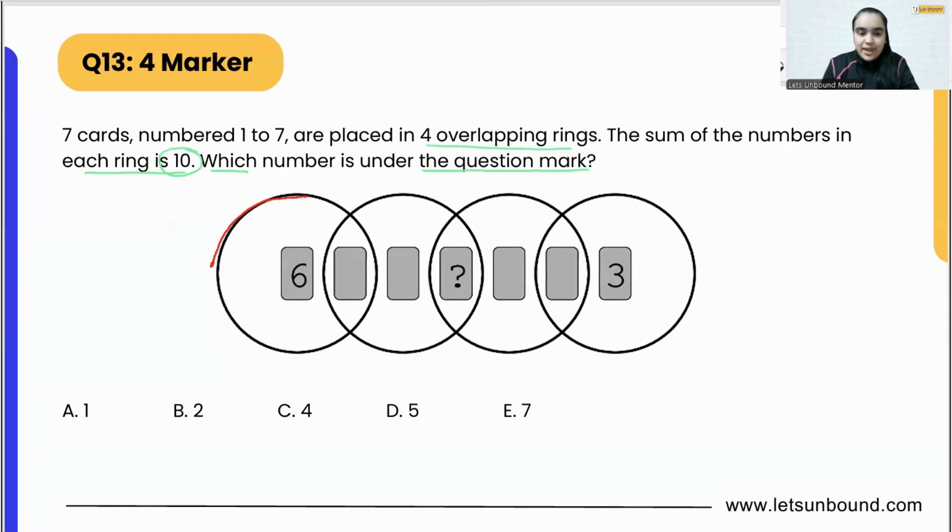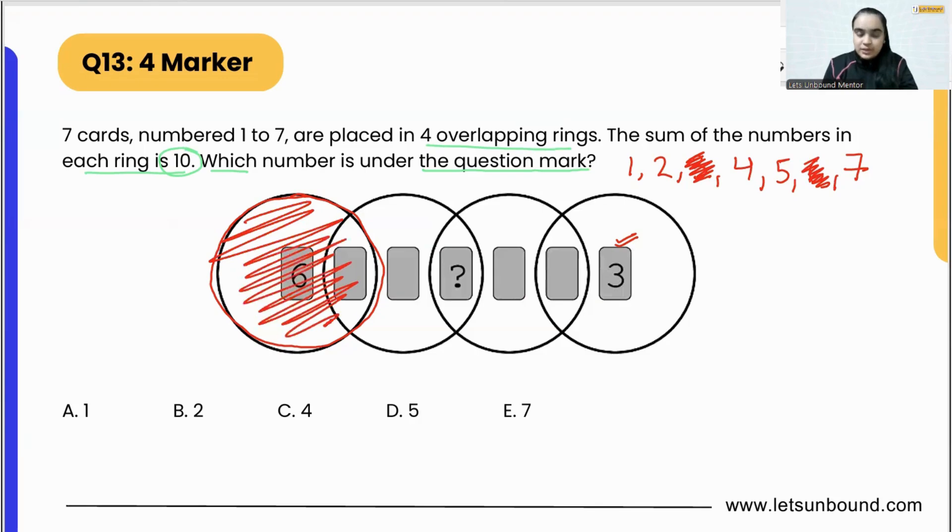Let's see, we just need to focus on the rings. For example, in the very first circle we are having two cards. Now what numbers we can add over here? I'm writing over here 1, 2, 3, 4, 5, 6, and 7. Out of which I can already see number 3 written over here and number 6 as well. So we are left with 1, 2, 4, 5, and 7 that we need to arrange.